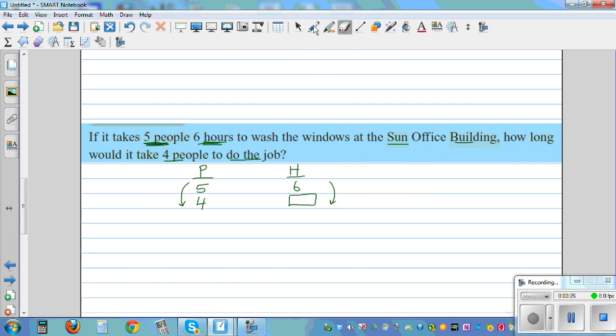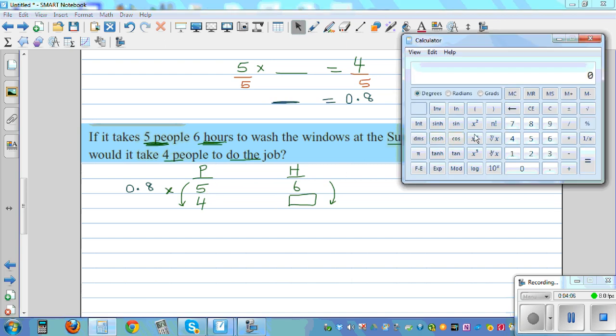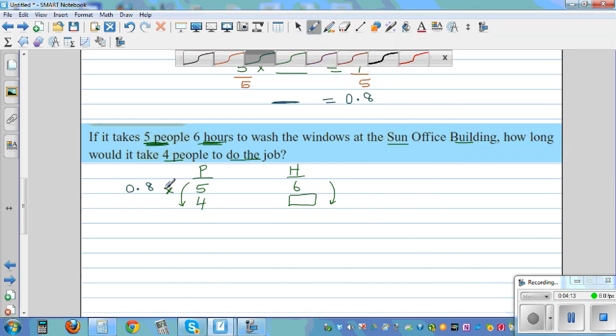So now 5 times what is 4? So let me write this question. 5 times what gives me 4? I am going to divide both sides by 5. So if you want to get this, if you divide this side by 5, you can divide this side by 5. So this has to be 4 fifth, which is 8 tenths, which is 0.8. So 5 times 0.8 gives you 4. If this is times, and as this is inverse proportion, you have to divide by 0.8.